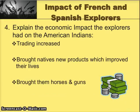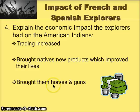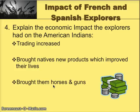On the somewhat positive side, there was an economic impact for the Native Americans. Trade increased and ended up bringing new products which improved their lives — some of those products included horses and guns. You might say guns wouldn't necessarily improve their lives, but when you look at the warfare that ensued, fighting with bow and arrow and other handmade tools versus a gun, the gun definitely ended up helping them.